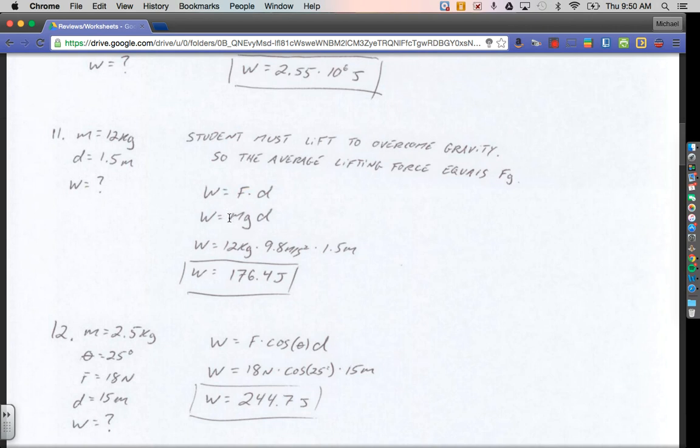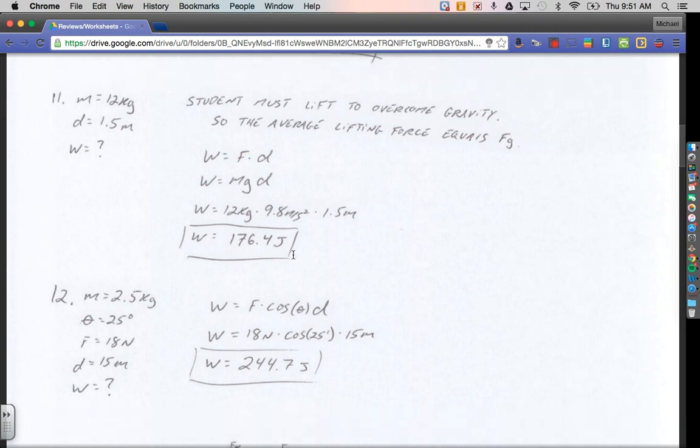That would be the mass of the books, 12 kilograms times 9.8. When we plug in our numbers, mass 12 kilograms, g 9.8 meters per second squared, and the height change is 1.5 meters. That's how far you lift the books. To give you a total amount of work done of 176.4 joules.